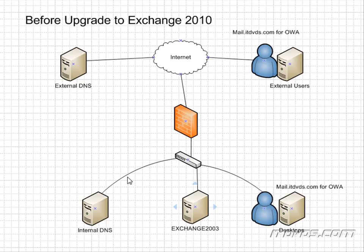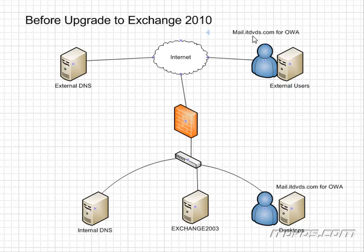A basic scenario for our Exchange 2003 upgrade to Exchange 2010 is going to be if we have one Exchange 2003 server. We may have a front-end Exchange 2003 server and a back-end Exchange 2003 server, but the concept is the same: users from outside our firewall are going to access their mailbox with RPC over HTTP or Outlook Web Access, going to a URL like mail.ITDVDs.com through the Internet, through the firewall, and hitting the Exchange server.